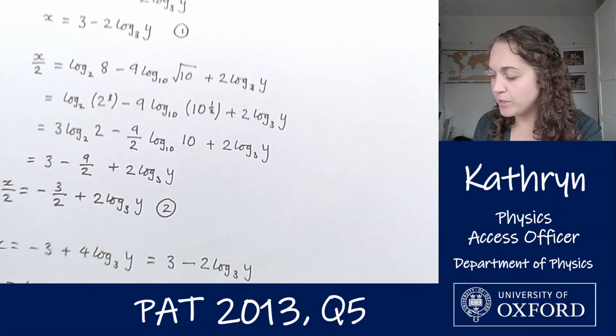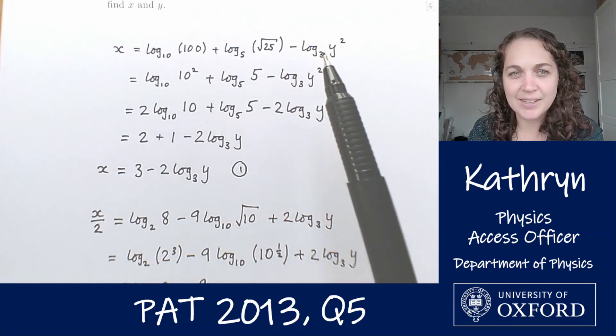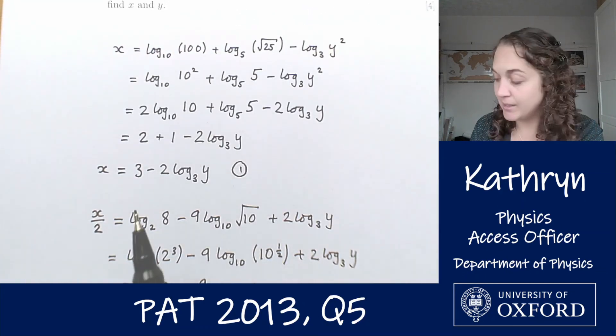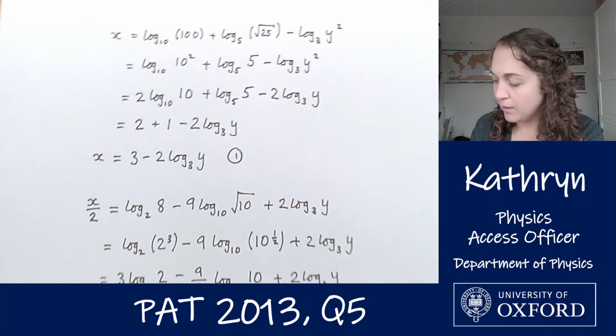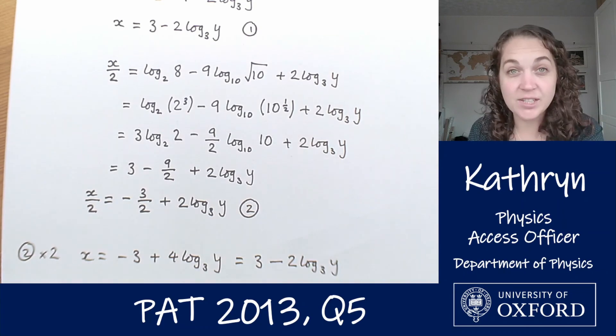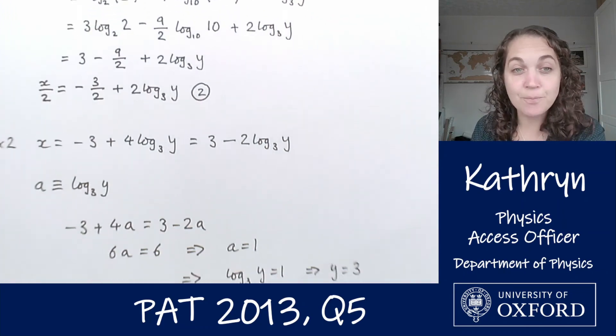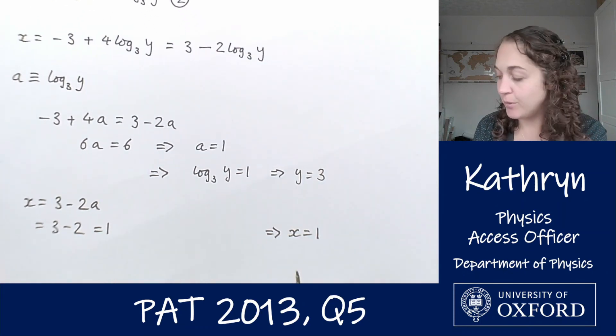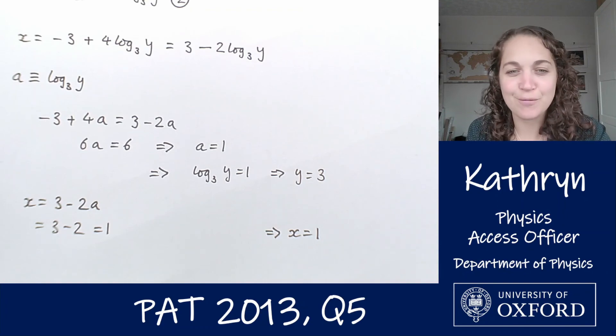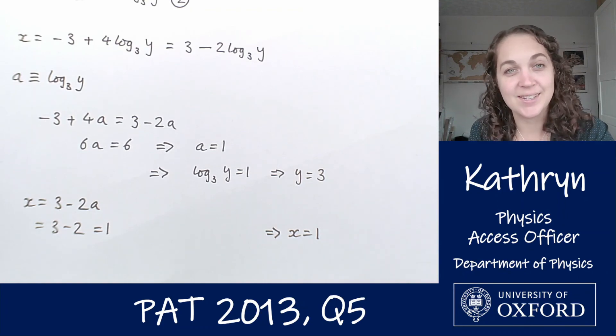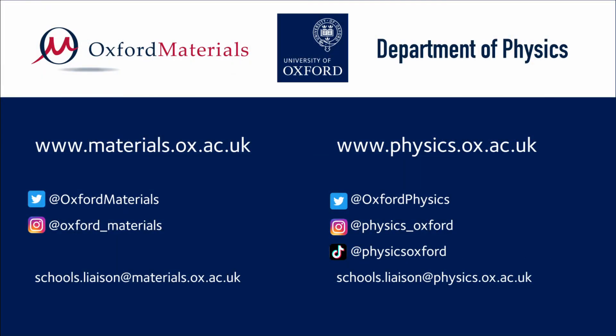Those are our values for x and y. We went through and simplified these equations using our log rules to come out with something that was a lot easier to work with. We did that for both equations, and then we simply treated them as a pair of simultaneous equations and solved them to find x equals 1 and y equals 3. That's our answer for question 5 on the 2013 PAT paper.